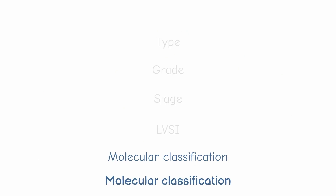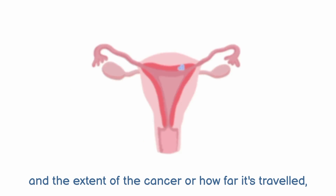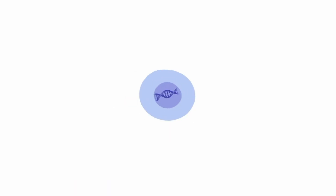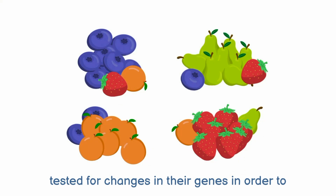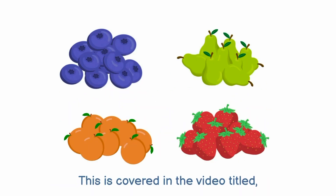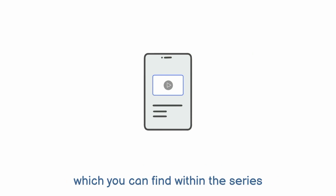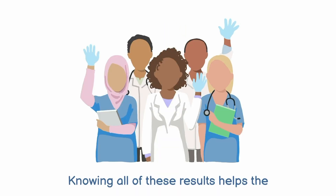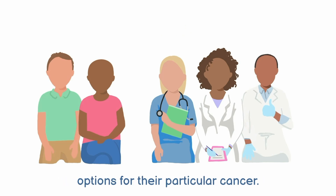Molecular classification. In addition to the appearance of the cancer cells and the extent of the cancer, it is also important to look within the cancer cells themselves. Cancer cells from the biopsy or hysterectomy samples are tested for changes in their genes in order to place the cancer into a molecular group. This is covered in the video titled 'Understanding My Tests – Molecular Classification of Womb Cancer'. Every person and every cancer is unique. Knowing all of these results helps the multidisciplinary team, the patient, and their family to make decisions on the best treatment options for their particular cancer.